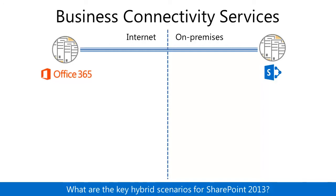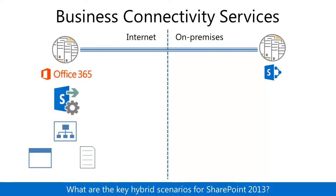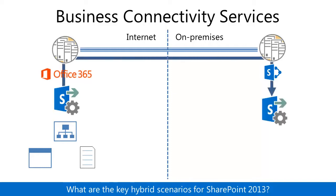For business connectivity services, or BCS, a SharePoint app or an external list installed on a SharePoint Online site collection can use the SharePoint Online BCS service to connect to the BCS service of an on-premises SharePoint Server 2013 farm, which brokers the connection for both read and write operations to on-premises OData service endpoints.